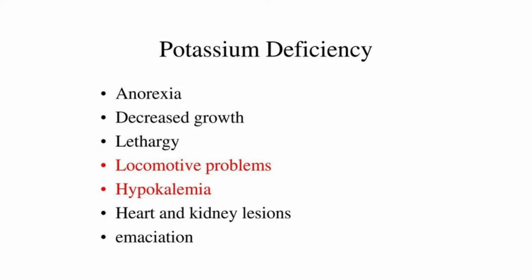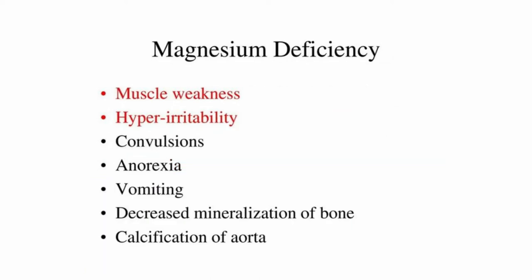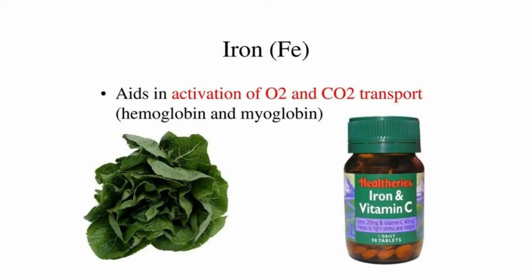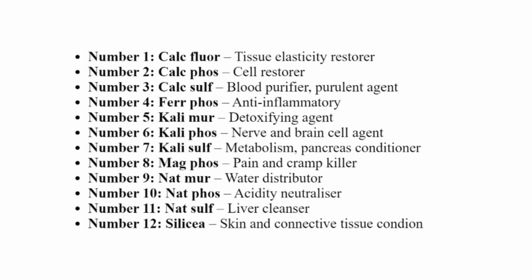Similarly, potassium is needed in muscle contraction and for nerve impulses, and a deficiency can lead to weakness, fatigue, and lethargy. Magnesium is equally important for muscles, and when your body is deficient in magnesium you will easily manifest muscle cramps or even twitches. Iron salts form an important part of hemoglobin, and you might have heard that low iron leads to anemia.